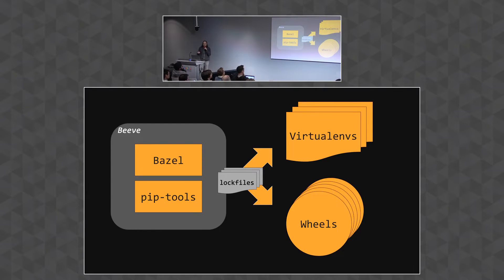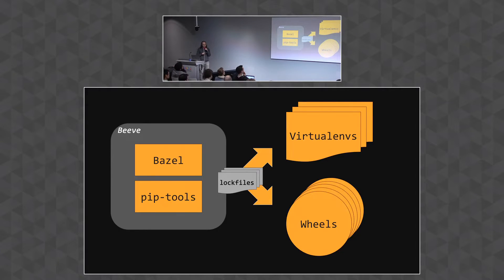We take each application's lock file and use it to generate a virtual env, which is where we do our development and unit testing. And we take that same lock file and generate a wheel, which we use to deploy the application.